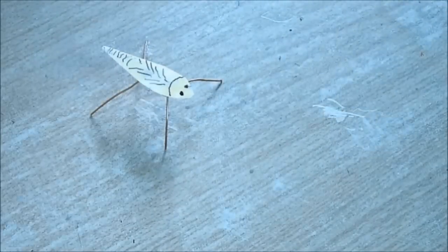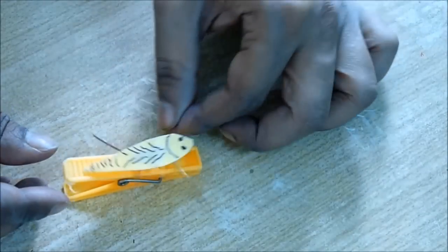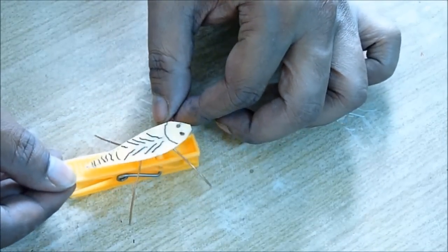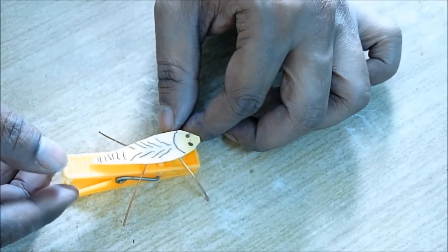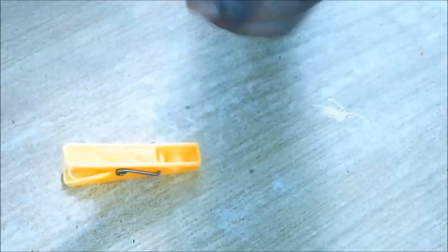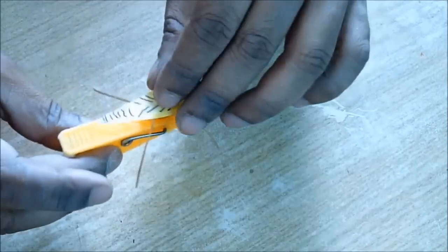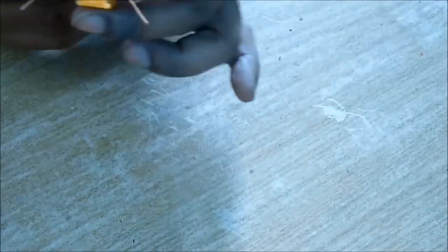Then take a laundry clip or a cloth clip, which generally we use to dry or hang clothes. Glue the insect we made on top of it. This is your insect ready.